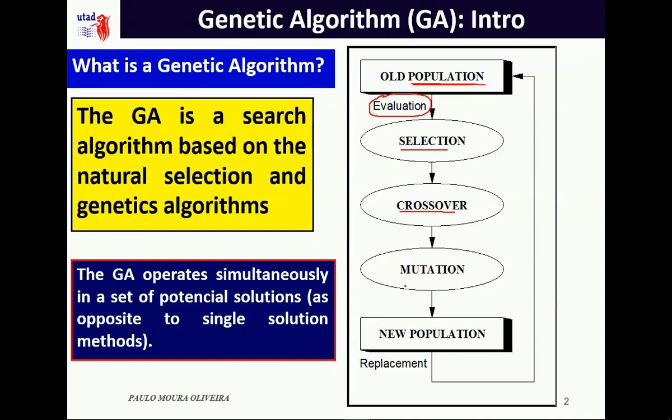We are going to speak a little bit about each one of these. With selection, we select the best ones to mate, to be crossed over and mutated, and this generates a new population. The new population then replaces the old population — this replacement can be total or partial.